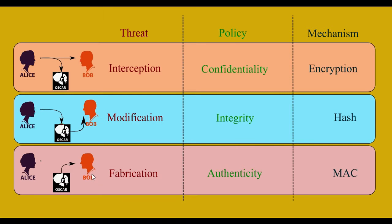For example, Alice is the legitimate sender for Bob, so Bob expects messages from Alice. But Alice didn't send anything. Oscar, a third party, created a message pretending to be Alice, and Bob may believe that the message came from Alice.